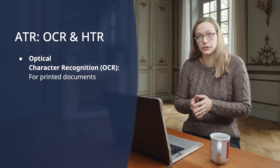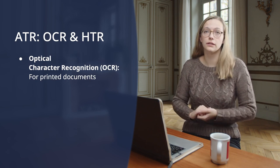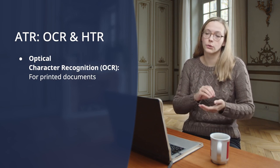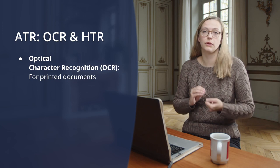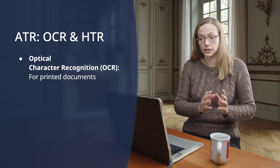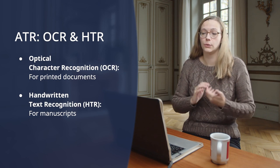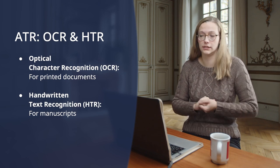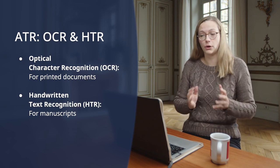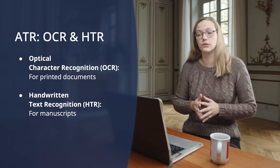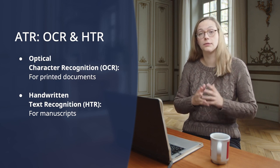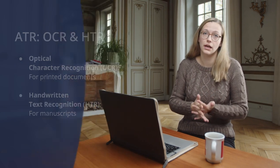ATR covers two fields. The first one is optical character recognition, also known as OCR, which is used to extract written text from printed documents. The second one is handwritten text recognition, or HTR, which is used to extract handwritten text from manuscripts. Both techniques use artificial intelligence, and more specifically machine learning, to extract text from images.